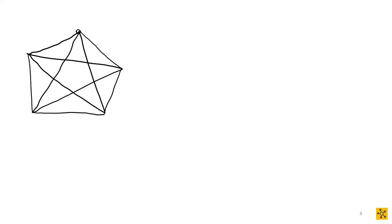Let's go through an example, because examples make things a lot clearer. We're going to find the Eulerian circuit using Fleury's algorithm. We need a graph — we'll use one we know is Eulerian. The vertices are A, B, C, D, and E. The first step is to start at any vertex; I'm going to start at A.